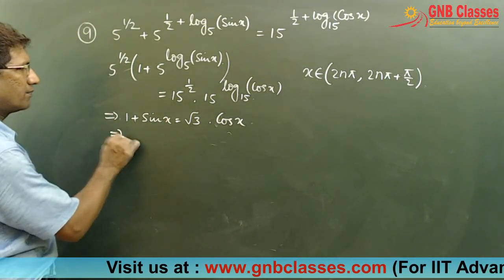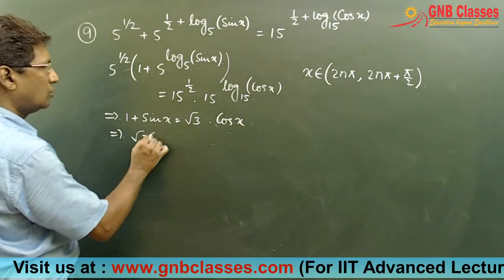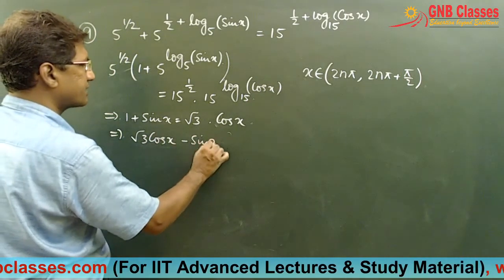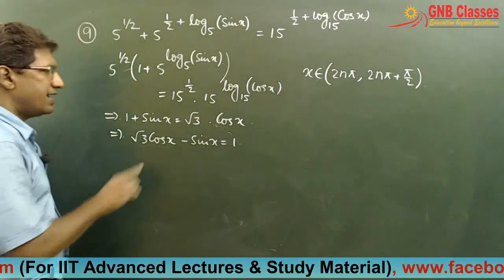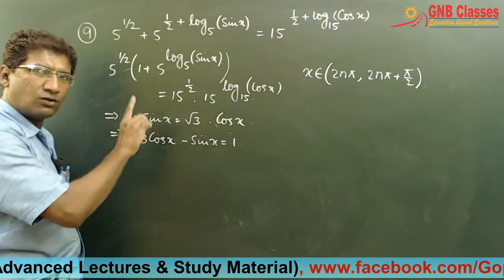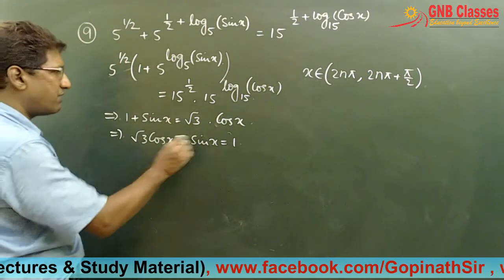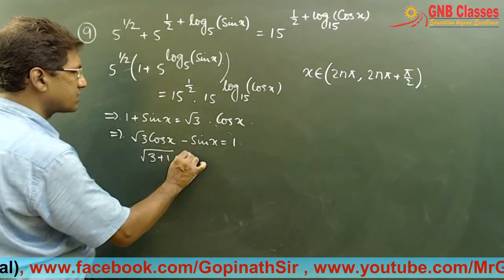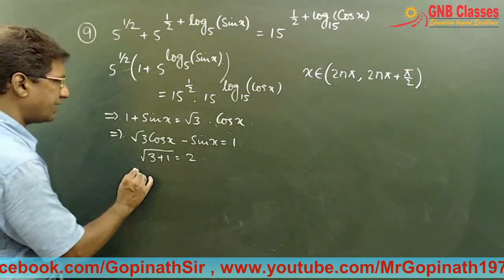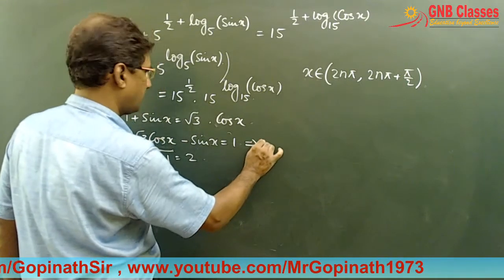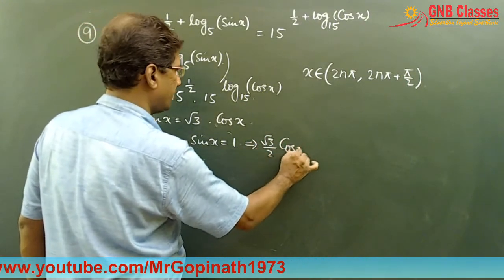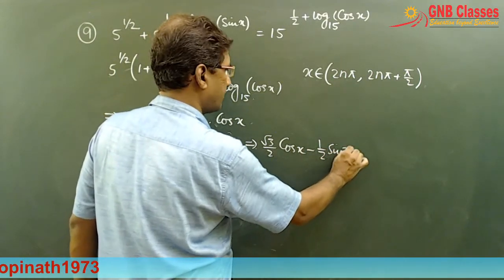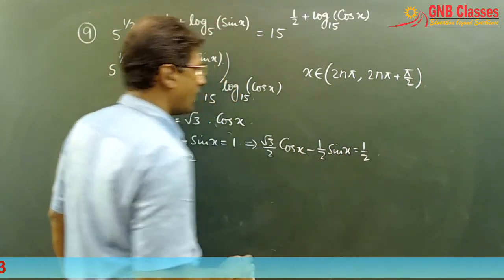So what we are getting is: root 3 cos x minus sin x equals 1. This is again the form A cos x plus B sin x, so we divide both sides by √(3 + 1) = 2, giving root 3 over 2 times cos x minus half sin x equals half.